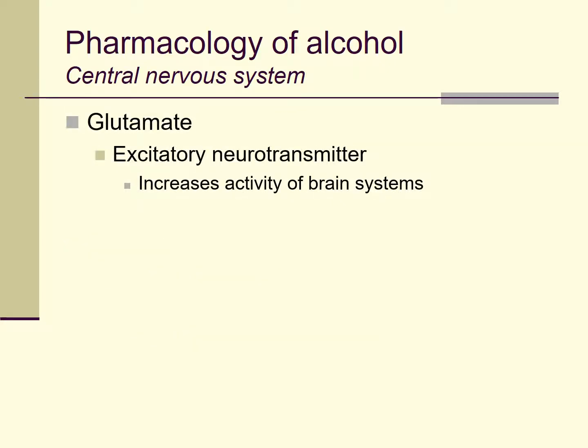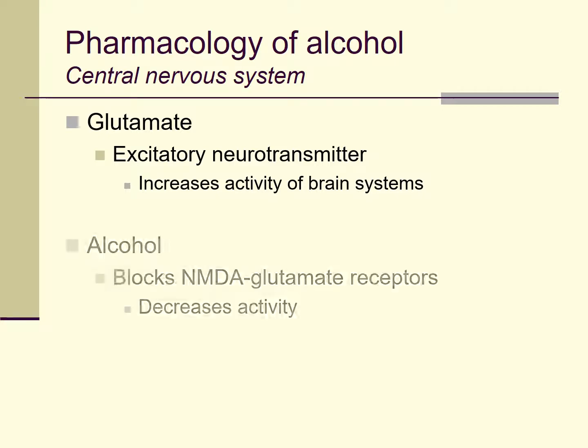Another neurotransmitter that alcohol affects is the glutamate system. Glutamate is almost like the opposite of GABA — it's generally an excitatory neurotransmitter, meaning when it is present it tends to increase the activity of different brain systems. Alcohol blocks a particular subset of glutamate receptors. If GABA is the brakes, glutamate is the gas — and alcohol slows your ability to stomp on the gas, which further decreases the activity of different brain systems.